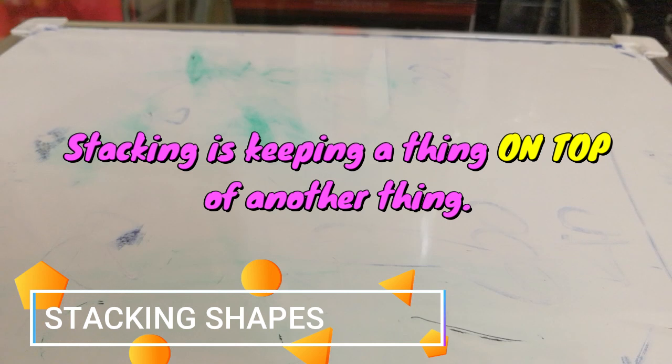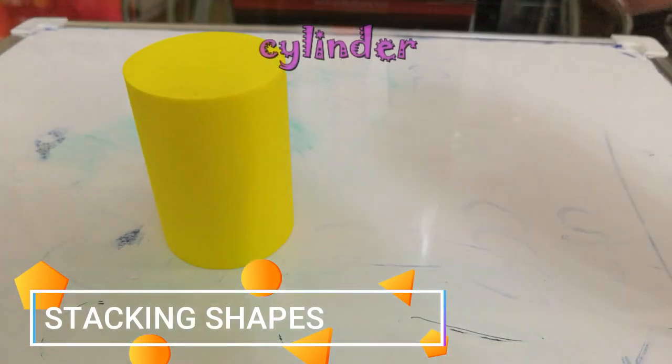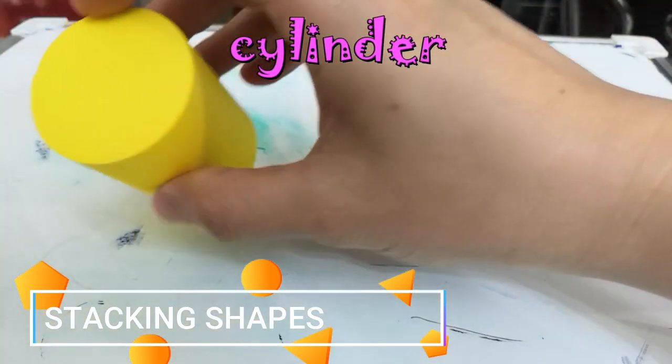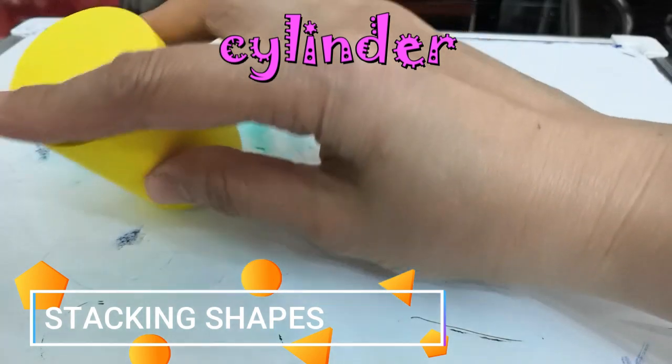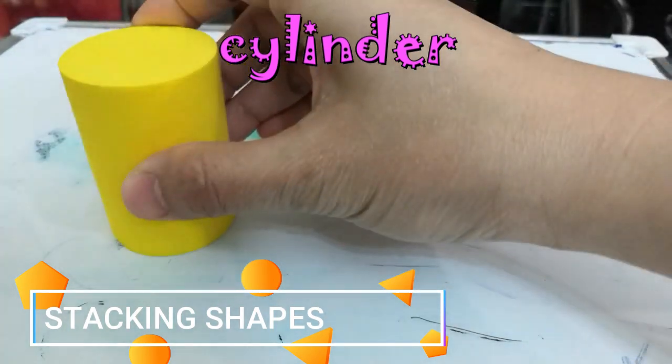Any object that has at least one flat surface can stack on top of any flat object. These are the shapes that can stack: cylinder. It has a flat face, so it can stack.